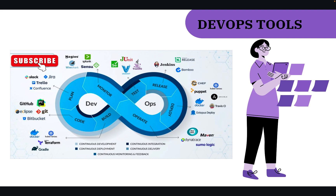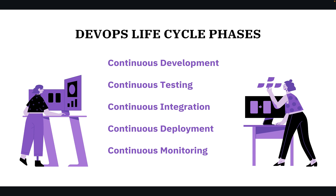In the development stage we use Git, Subversion, GitLab, and we also use Jira as a bug tracking tool. Basically there are five stages of the DevOps life cycle: continuous development, continuous testing, continuous integration, continuous deployment, and continuous monitoring.